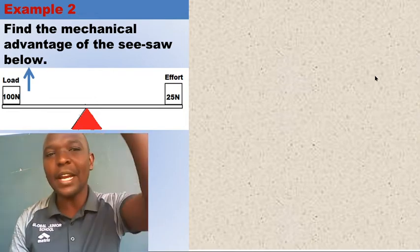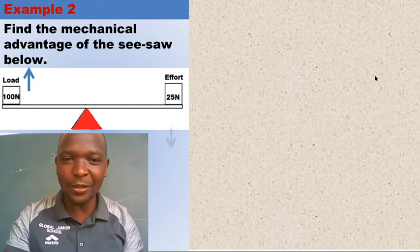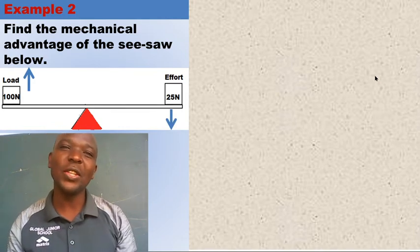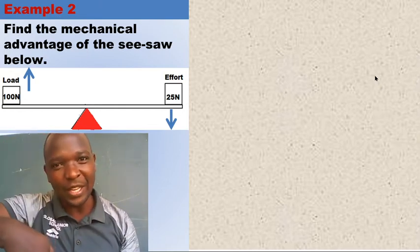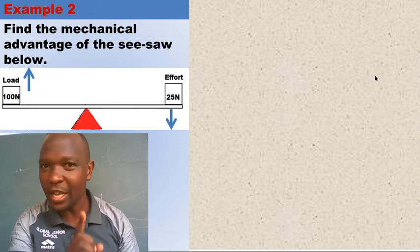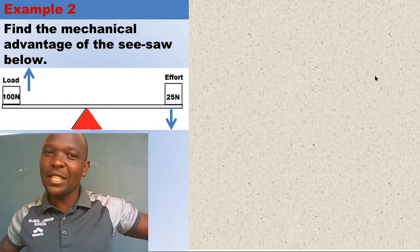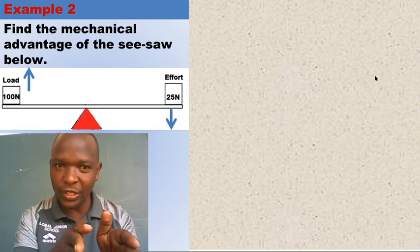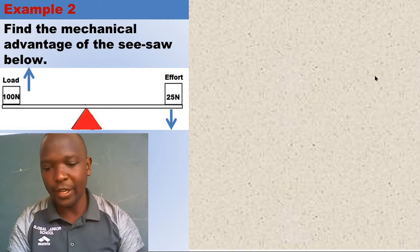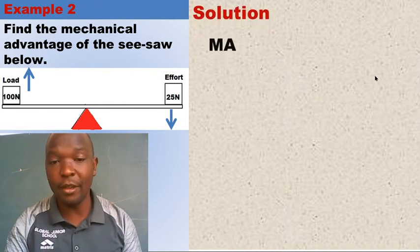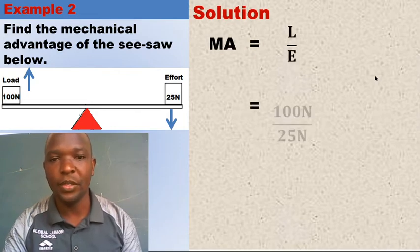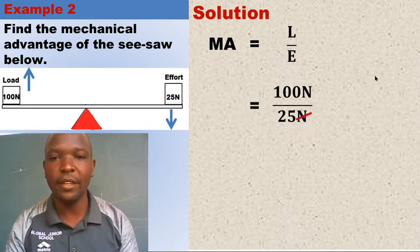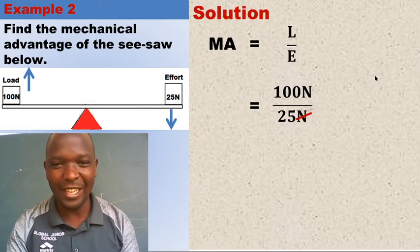If the load arrow faces up, the effort arrow faces down. So in an examination when they say show the direction of effort on the diagram, the effort arrow goes down and the load arrow goes up. That is our example. Solution: MA equals load divided by effort, so we have 100 newtons divided by 25 newtons.